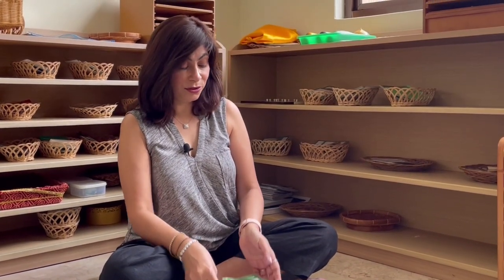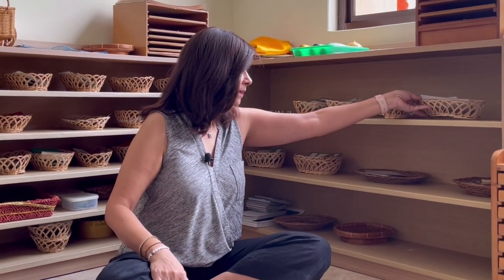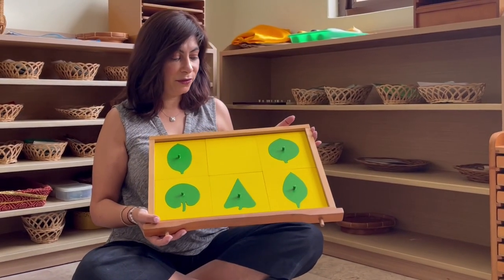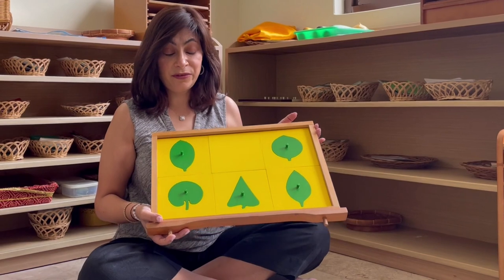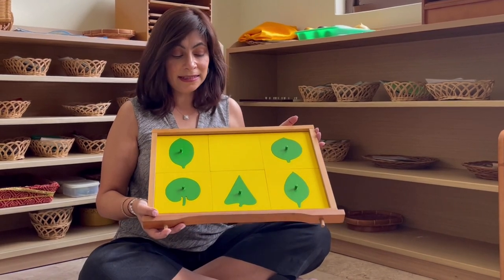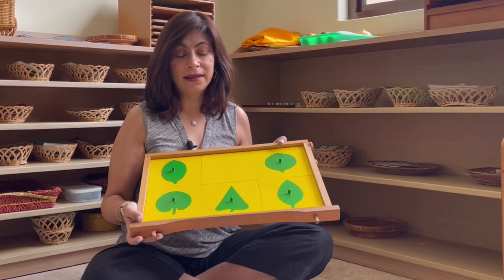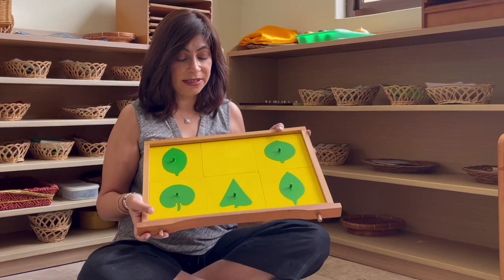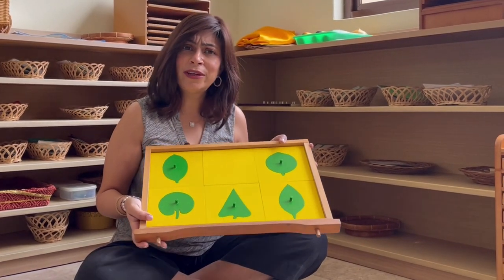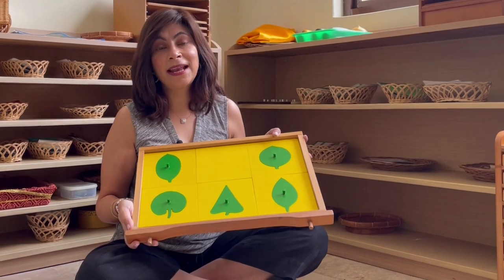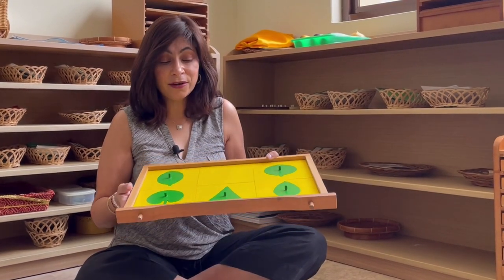I'm giving you this all in a nutshell, taking you through the materials. Stay with Sunshine Teachers Training and you'll keep learning how to use them. Next we have the leaf cabinet, where children learn about different leaf shapes across three trays, presented very similarly to the sensorial cabinet with shapes. We can then invite children on a nature walk to find leaves with similar shapes, and they can trace and color them.